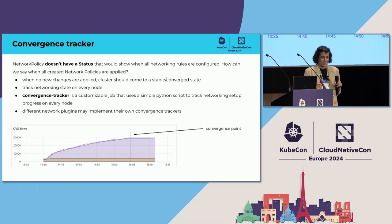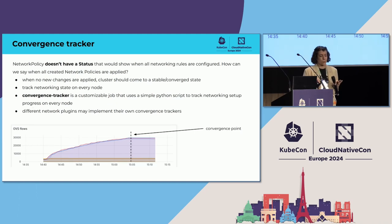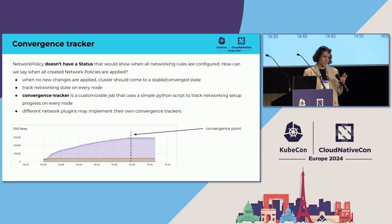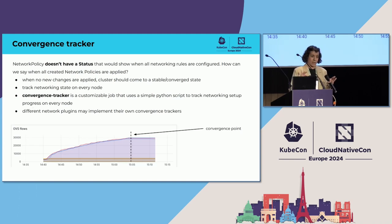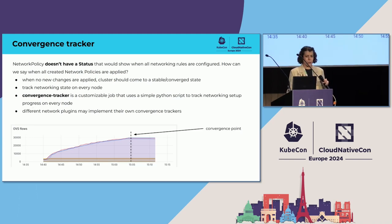We are almost ready to run our scale test, but not just yet. There is one extra important feature of network policy we need to figure out: network policy doesn't have a status. That means we have no way to know when all the network policies are applied. All the objects will be created, but it doesn't mean they are applied to all selected pods at the same time. So we need to track networking state on every node — that's what we call a convergence tracker job.